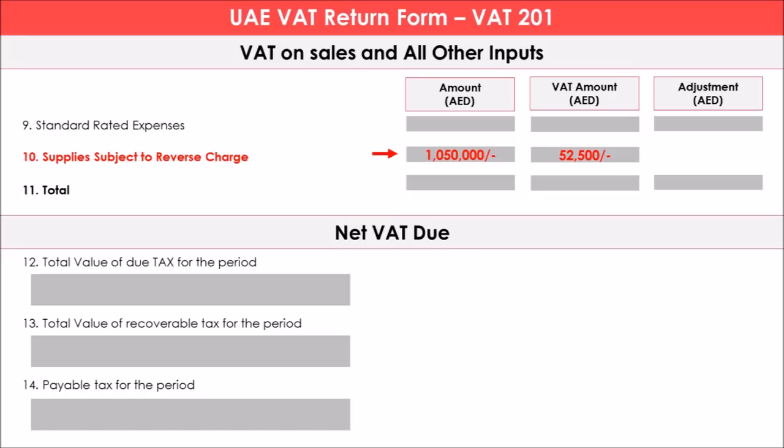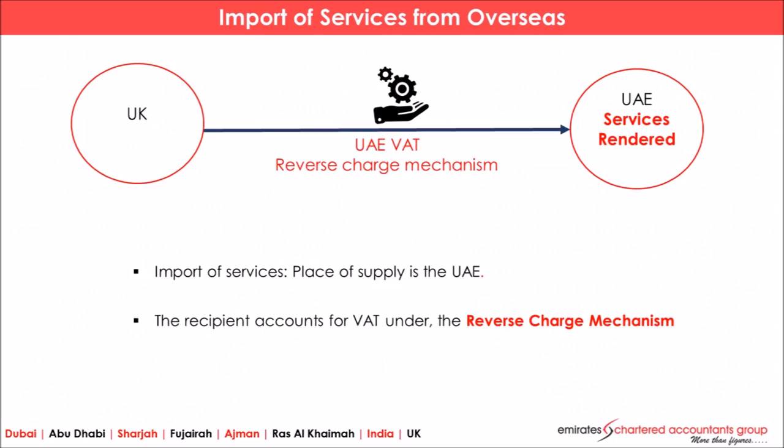The amount disclosed under box number 6 can be reversed under box number 10. Now let us see how import of services is to be recorded — it is quite simple. In the case of goods, there are customs procedures and customs declarations. But for import of services, there is no such formality. As and when the invoice is received from the overseas supplier and payment is made, that is the import of services. Here, services imported from the UK to the UAE — reverse charge mechanism will be applicable, and the place of supply is UAE.